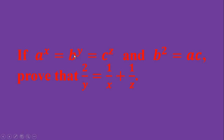Today we will talk about exponential equations and related equations. The equation is: if A^x = B^y = C^z and B² = AC, then we have to prove that 2/y = 1/x + 1/z. That is our equation and we have to prove it.